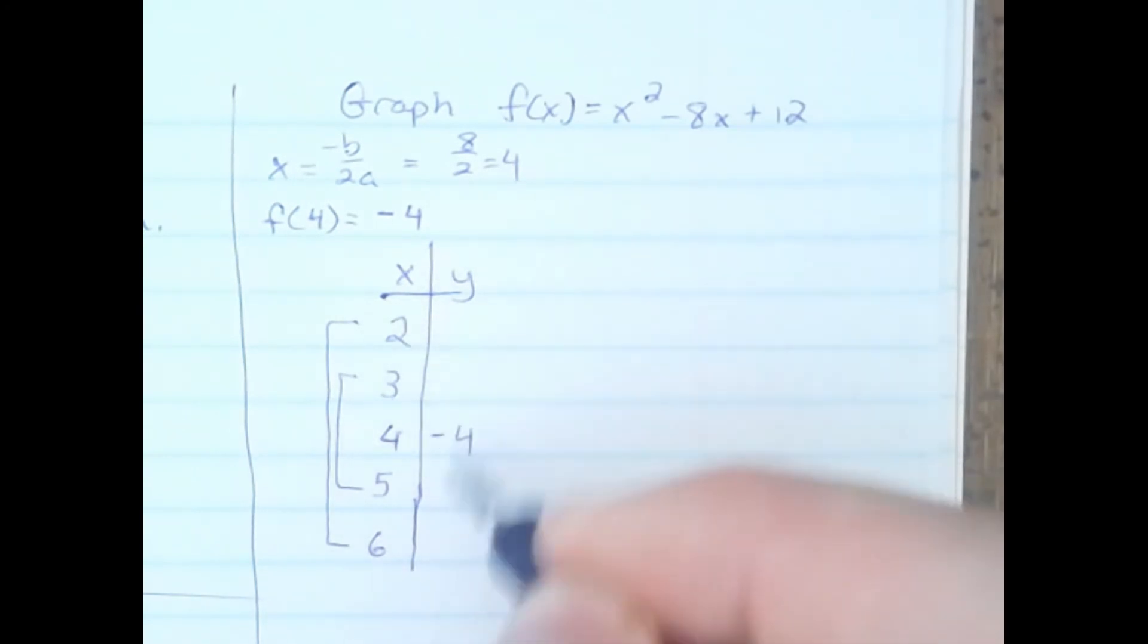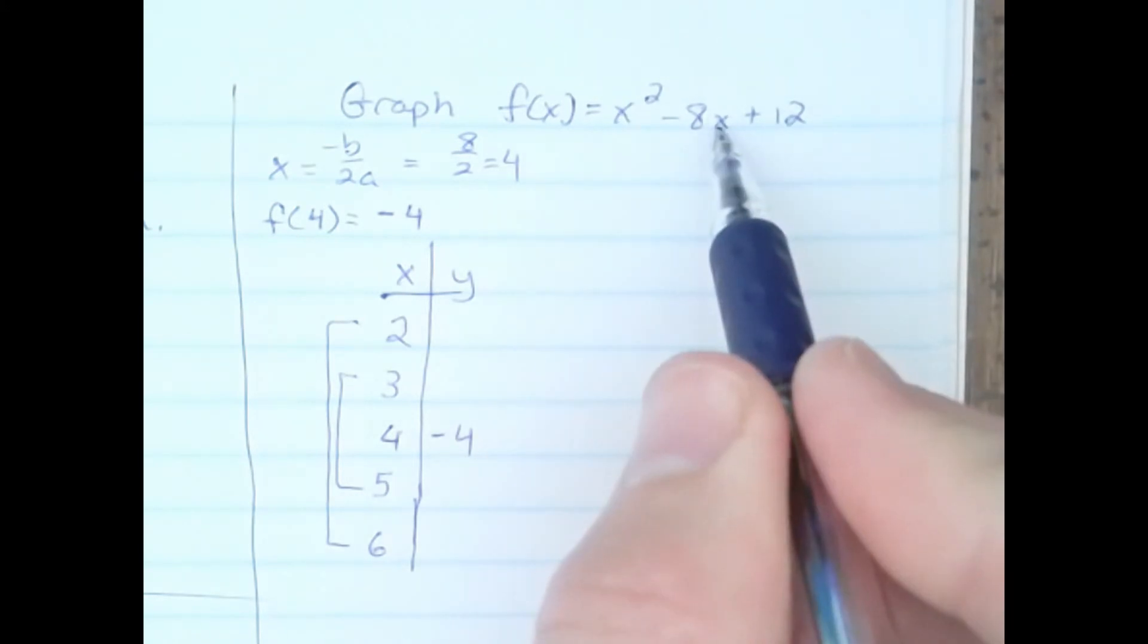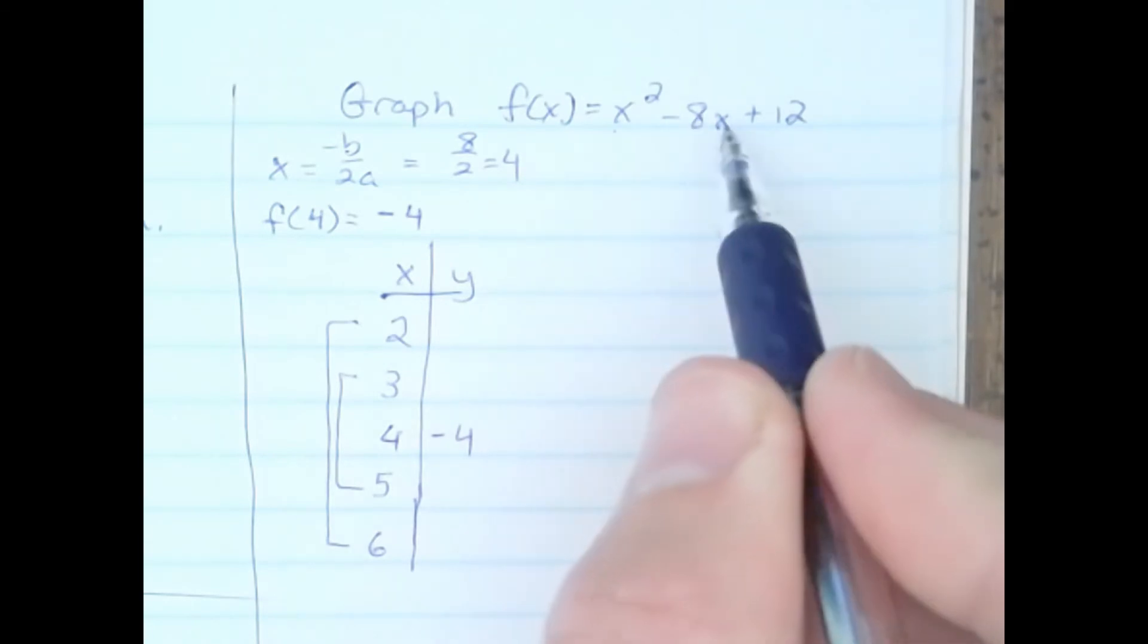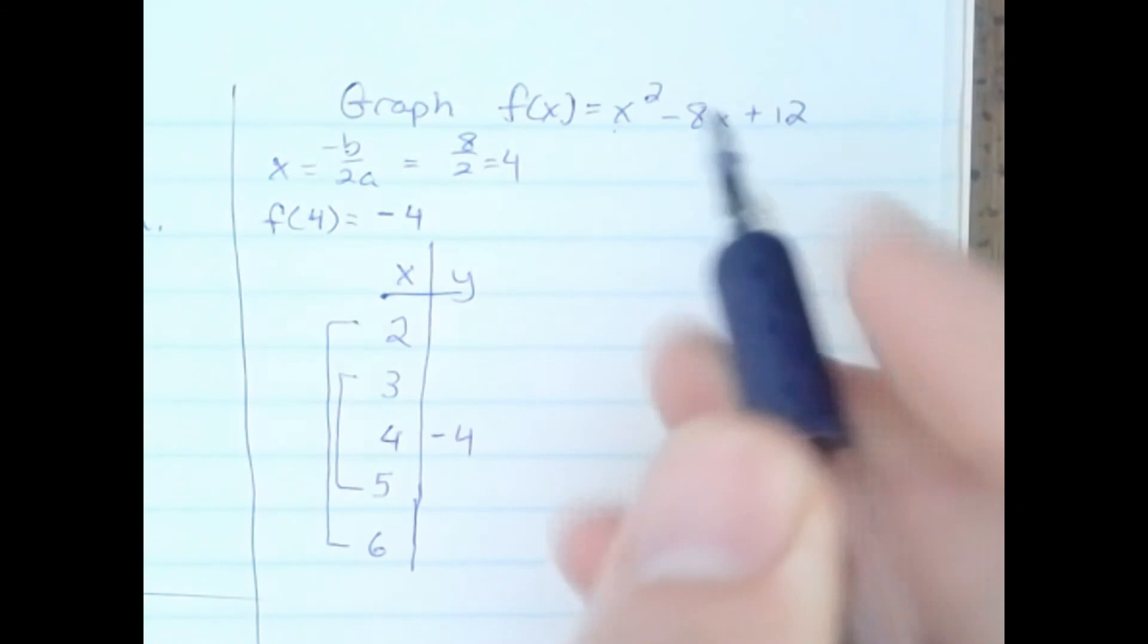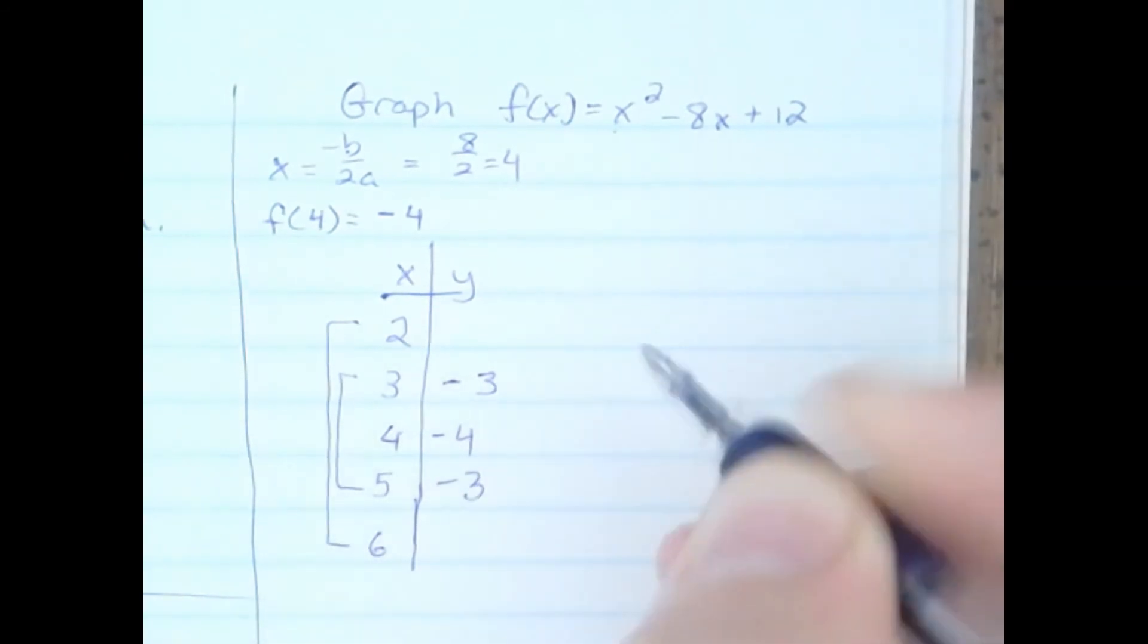those y-values will correspond to these two y-values. When I plug in 3, I get 9. 8 times 3 is 24, so 9 minus 24 is negative 15. Negative 15 plus 12 is negative 3. If this is negative 3, this is negative 3.